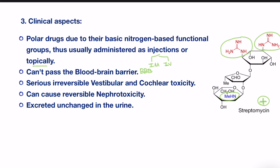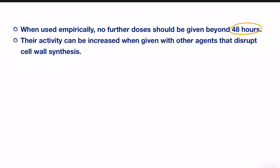The clinical use of these drugs is limited by their serious side effects, which include irreversible vestibular and cochlear toxicity, and reversible nephrotoxicity. Aminoglycosides are excreted unchanged in the urine, which must be considered when given to patients with renal problems, as dose adjustment is required. To avoid possible side effects, these drugs cannot be given beyond 48 hours when used empirically, as this treatment is not yet based on microbiology culture and sensitivity tests.